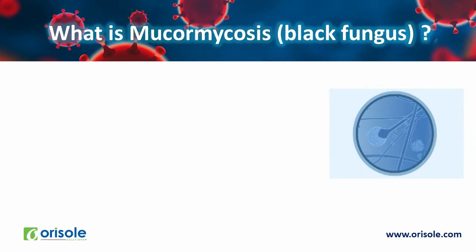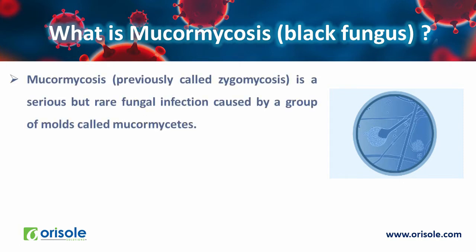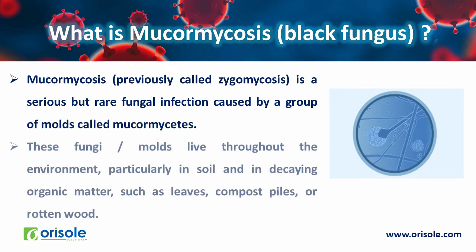What is mucormycosis or black fungus? Mucormycosis is previously called zygomycosis. It is a serious but rare fungal infection caused by a group of molds called mucormycetes. These fungi live throughout the environment, particularly in soil and in decaying organic matter such as leaves, compost piles or rotten wood.